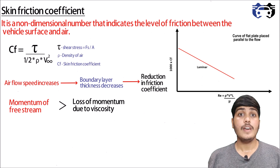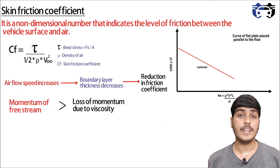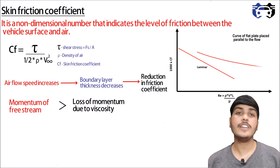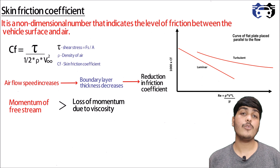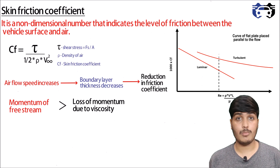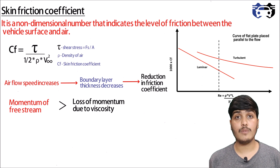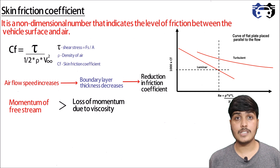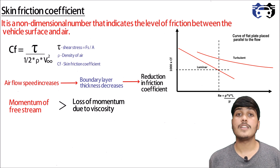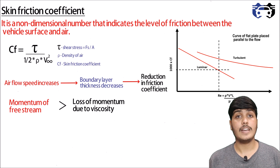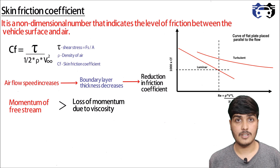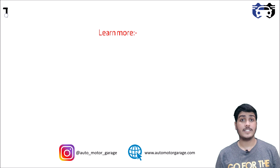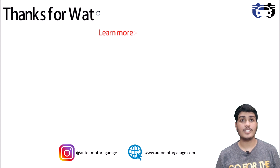The previous curve was for laminar flow; for turbulent flow, the friction coefficient curve is higher for the same Reynolds number values. Both laminar and turbulent flows can exist at the same Reynolds number, but the skin friction coefficient is lower for laminar flow because of the lower rate of momentum transfer. Therefore, to reduce vehicle drag, laminar flow is preferred due to its lower skin friction coefficient.